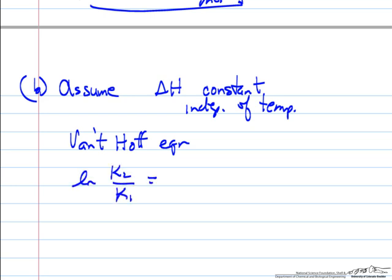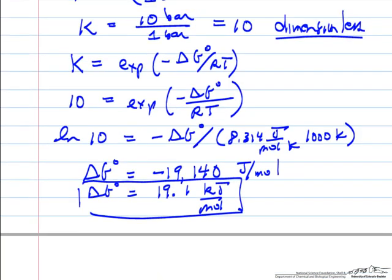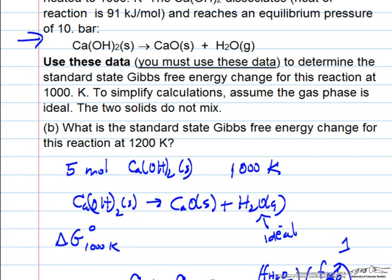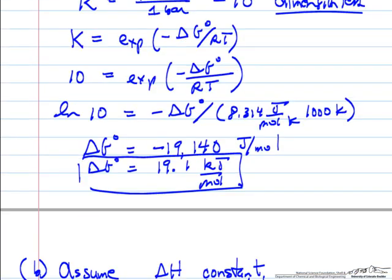Log of K2 over K1 is related to the heat of reaction over the gas constant times 1 over T2 minus 1 over T1, where we know we're trying to find K2. So log of K2 over 10, that's at 1000 Kelvin. Heat of reaction is given, the problem is 91 kilojoules per mole.